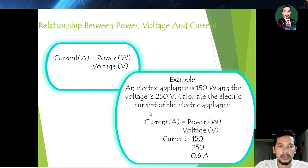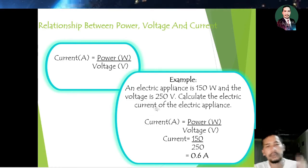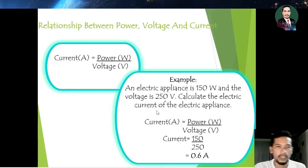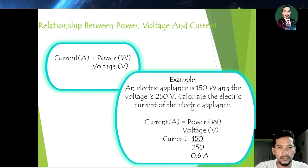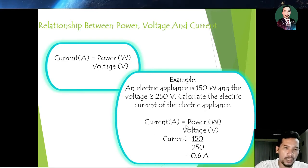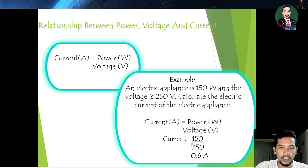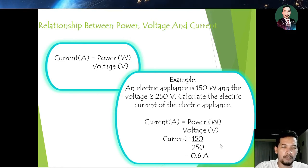Let's see an example of how to calculate the relationship between power, voltage, and current. An electrical appliance is rated at 150 watts and the voltage is 250 volts. Calculate the electrical current of the appliance. The formula is: current is equal to power divided by voltage. So the current is 150 divided by 250, which gives us 0.6 amperes.